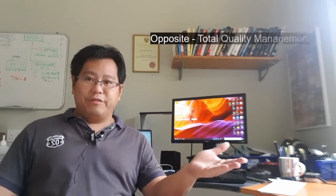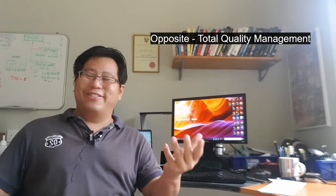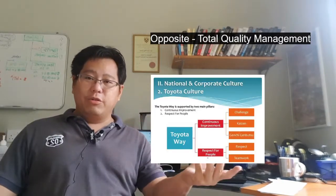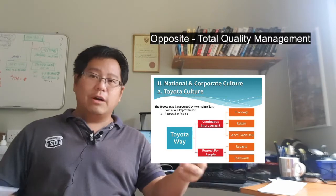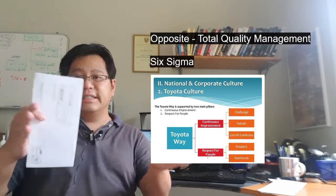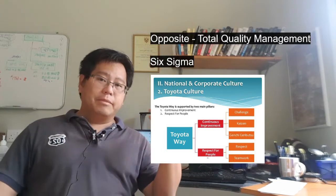To understand Agile, we have to take a look at the opposite of Agile. And that opposite is stiff. It's not really stiff. It is TQM, Total Quality Management, or what you might have known, Six Sigma. This is the opposite of Agile.